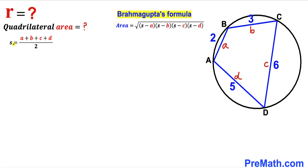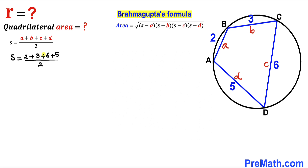Let's calculate the value of s. We substitute a = 2, b = 3, c = 6, and d = 5. Adding the numerator values gives 16 divided by 2, so our s value turns out to be 8.